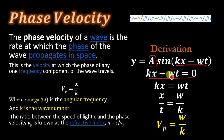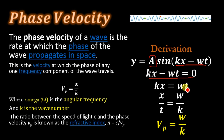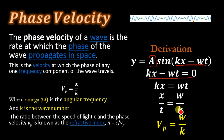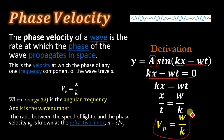Taking the phase term equal to zero and solving, we get kx = ωt. Transferring −ωt from the left-hand side gives kx = ωt. Dividing both sides by kt, we get x/t = ω/k, and finally vp = ω/k. This equation represents the phase velocity.